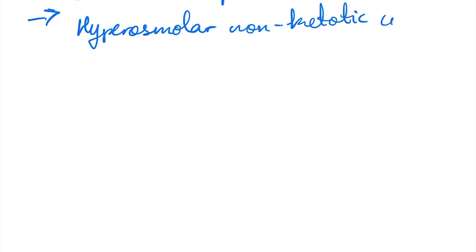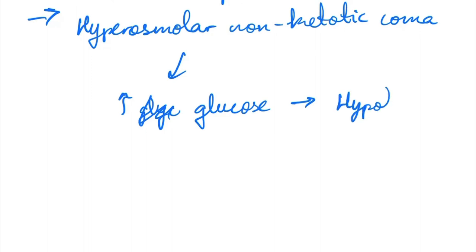Here, the individual is at high risk for a specific condition called hyperosmolar non-ketotic coma, wherein the high glucose levels can cause life-threatening diuresis with hypotension and coma, as the name suggests.